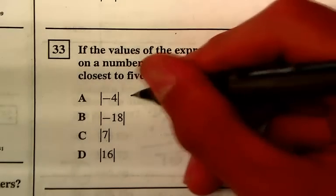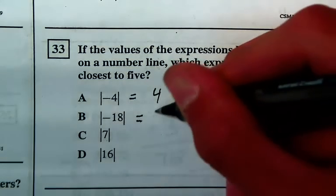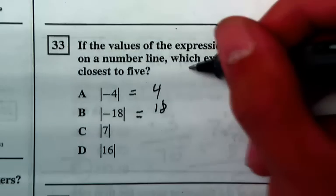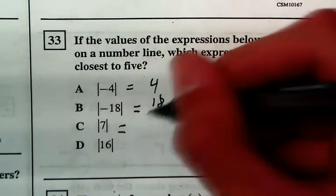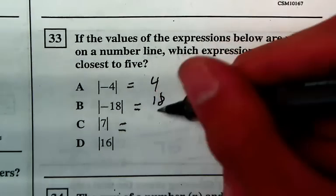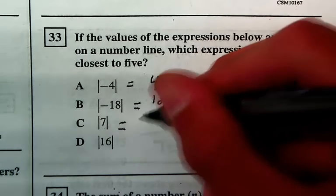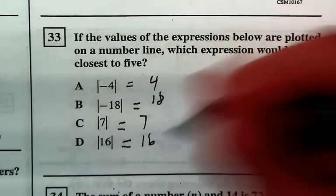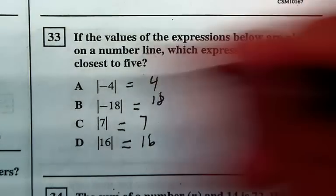The absolute value of negative 4 is 4. The absolute value of negative 18 is 18. And negative 7 is 7. The value of 16 is 16. So 4 is closest to 5 on the number line, so it's A.